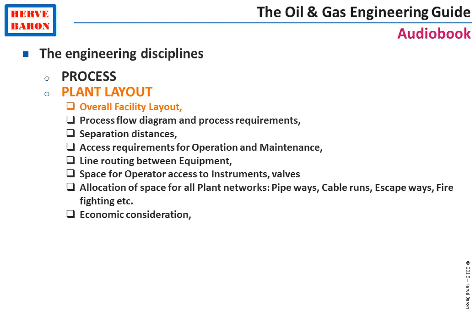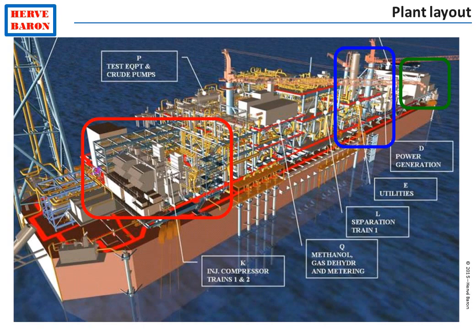An oil and gas facility comprises process units, utility units, as well as off-sites such as storage and off-loading, fire station, control room and office buildings. Utility units are located away from process units in order that they remain operational in the event of an incident in the process units. Manned buildings are located furthest away from process units and in a location where personnel can easily escape the facility.